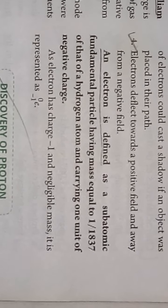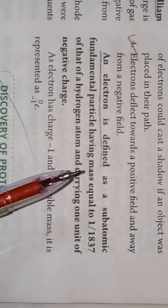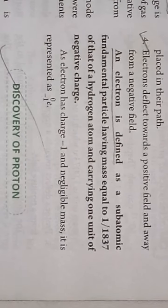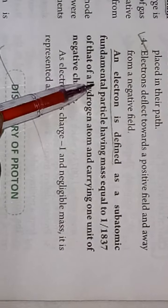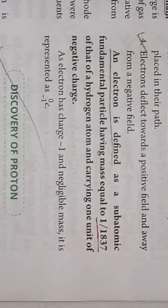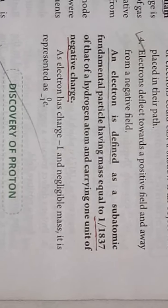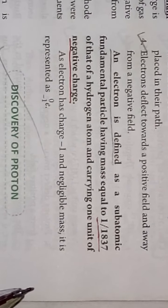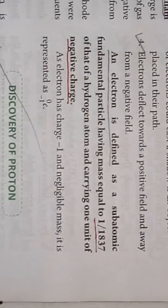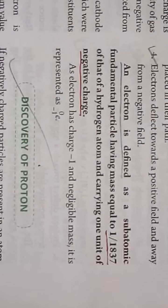Electrons deflect towards a positive field and away from the negative field, because these electrons are negatively charged — that is why they are repelled by the negative field and attracted towards the positive field. An electron is defined as a subatomic fundamental particle having a mass equal to 1/1837 of that of a hydrogen atom and carrying a unit negative charge. You have to remember: the charge is minus 1.602 × 10⁻¹⁹ coulombs and the mass is 9.107 × 10⁻²⁸ grams.